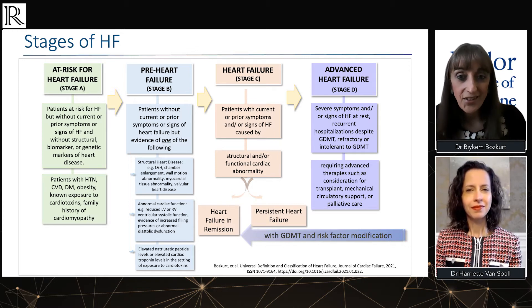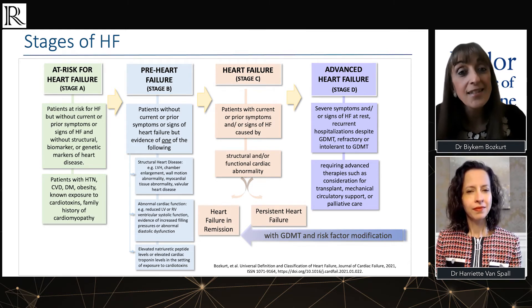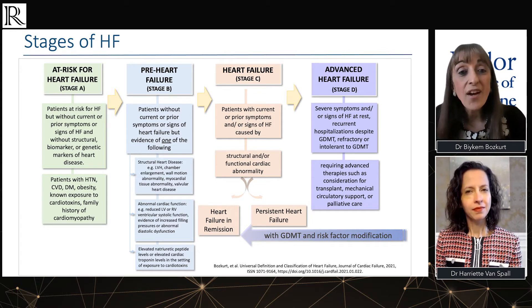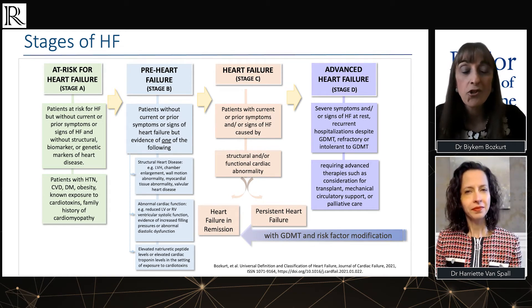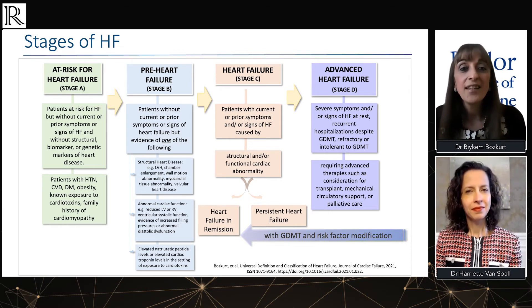The second group is called 'pre-heart failure': patients without current or prior symptoms or signs of heart failure but with evidence of either structural abnormalities or elevated biomarkers, such as natriuretic peptides or cardiac troponin in the setting of cardiotoxicity — this was the former stage B. The third stage is called 'heart failure,' meaning symptomatic heart failure as the syndrome definition implies. The fourth stage is 'advanced heart failure': severe symptoms or signs of heart failure requiring recurrent hospitalizations, which is the former stage D. In essence, the stages are very similar to the former A, B, C, D stages, but with the nomenclature of 'at risk,' 'pre-heart failure,' 'heart failure,' and 'advanced heart failure,' which is more translatable to patients — similar to how 'pre-cancer' was able to establish where patients are in terms of disease progression.